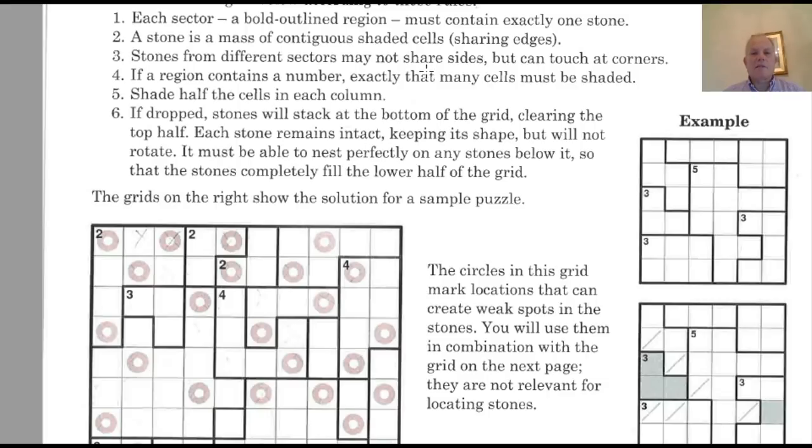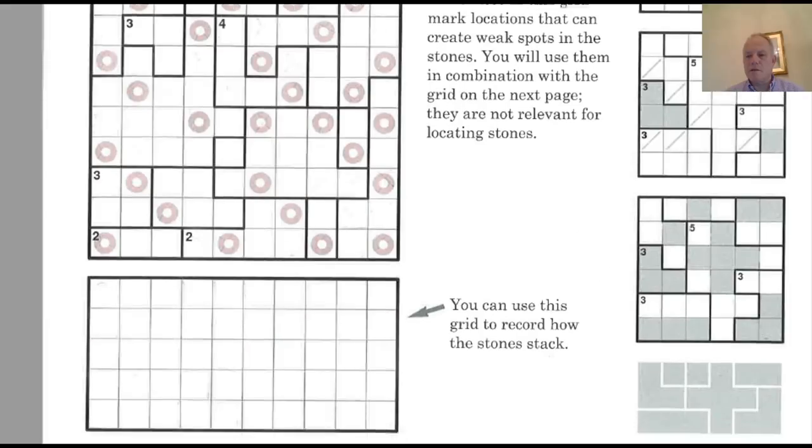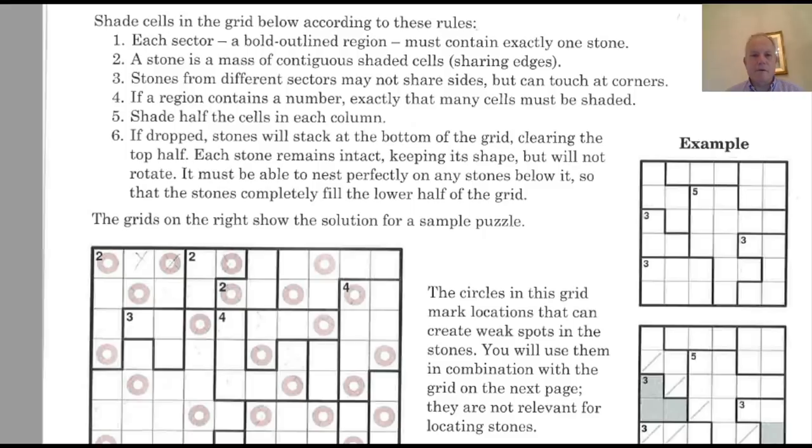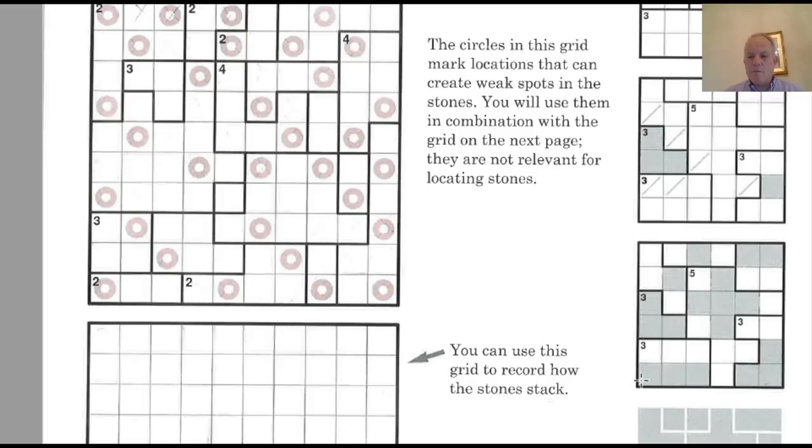Stones from different sectors may not share sides, but can touch at corners. So again, here in the example, you can see they can touch diagonally, but they can't share sides. Now that's clearly going to be very important. Shade half the cells in each column. So in their example puzzle, which is six by six, three cells in every column end up being shaded.